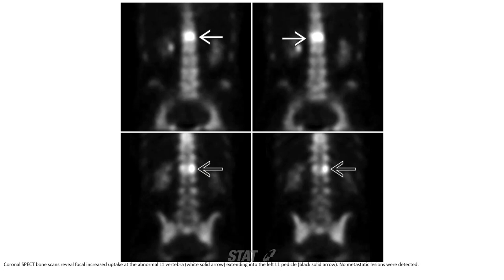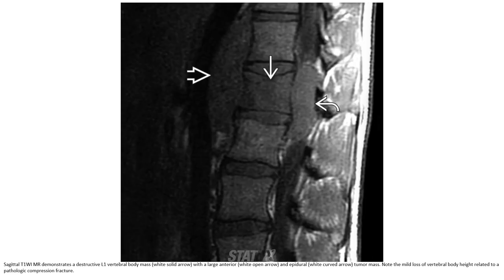T1WI MRI demonstrates a destructive vertebral body mass with a large anterior and epidural tumor extension. Note the loss of vertebral body height related to a pathologic compression fracture.